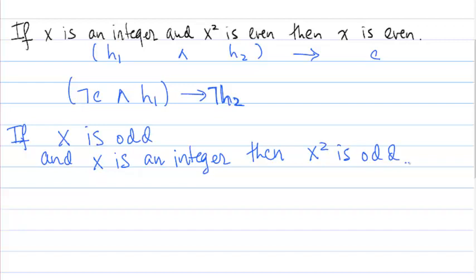And the reason that we're doing a proof by contrapositive is that it's actually easier to work with the fact that x is odd than to work with the fact that x² is even. If x is odd, then we can express it. The definition of being odd is that x can be expressed as 2k+1 for some integer k.